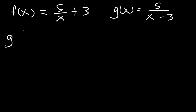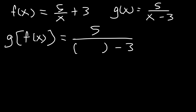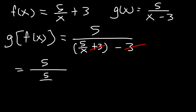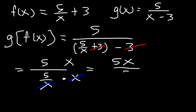Now let's focus on g(f(x)). G is 5/(x − 3), and we substitute f(x) = 5/(x + 3) for x. The 3s cancel, leaving 5 divided by (5/x). Multiplying the top and bottom by x, those cancel, giving 5x/5. The 5s cancel, leaving x. So f(g(x)) = x and g(f(x)) = x, therefore f(x) and g(x) are inverses of each other.